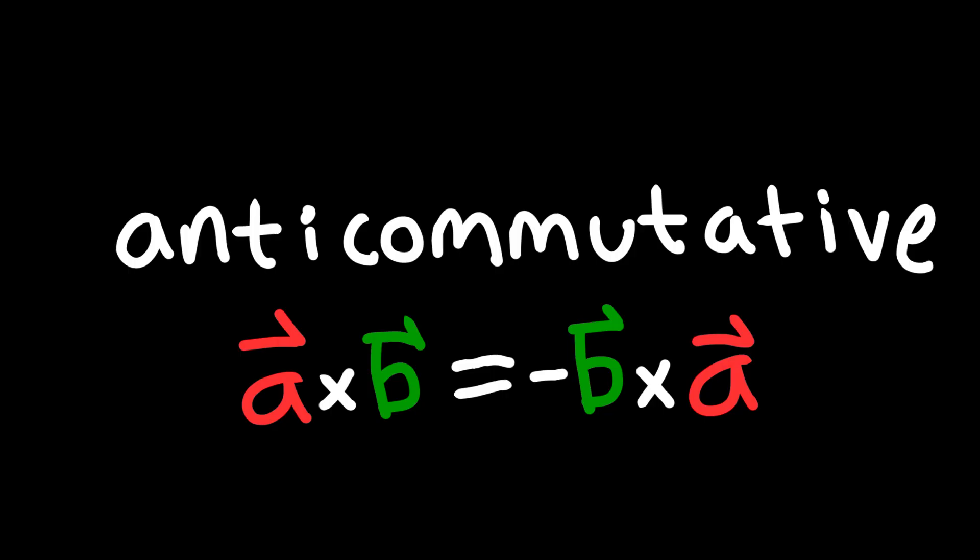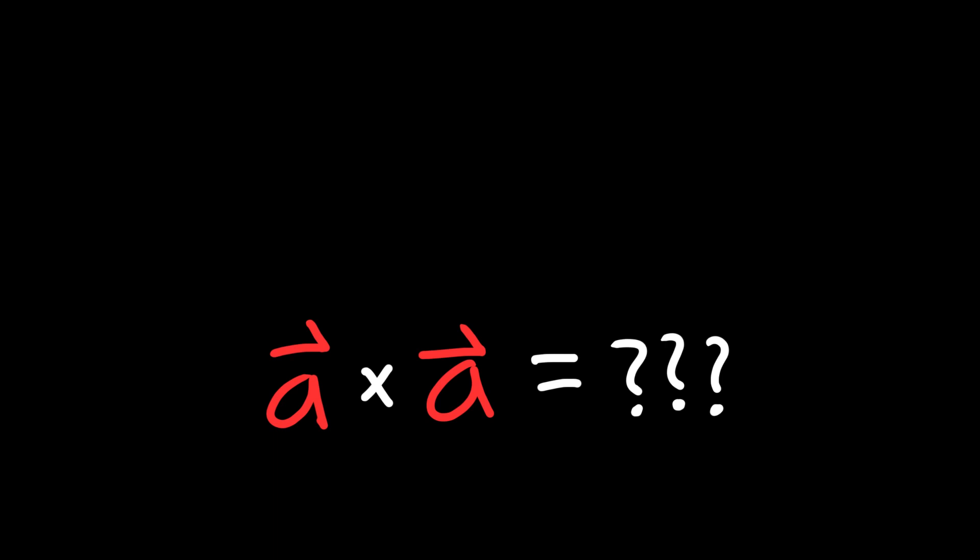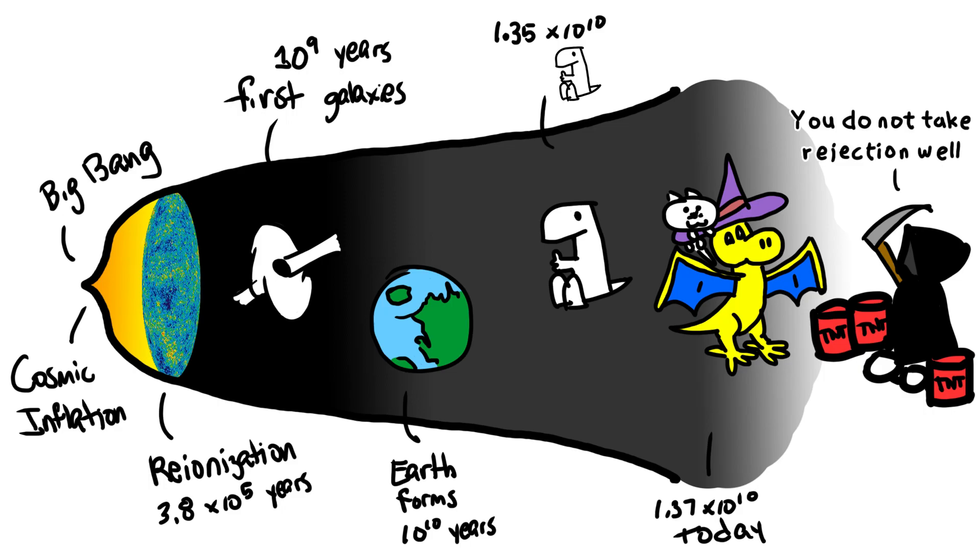So considering that the cross product will return a vector that is perpendicular to two other vectors in 3D space, one might wonder what happens if you try to take the cross product of two vectors that are the same. And the answer to that, simply put, is that it's impossible, and if you attempt to do it, the universe will explode, so don't even think about it.